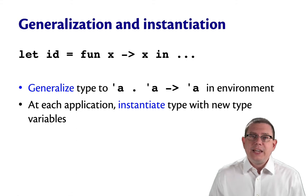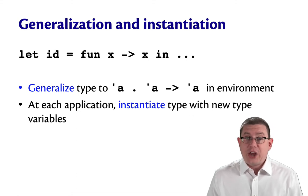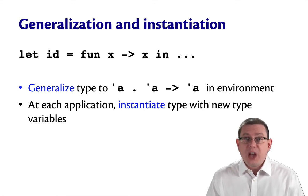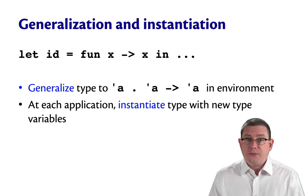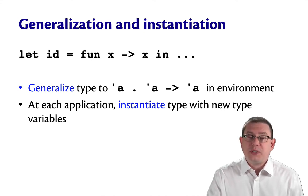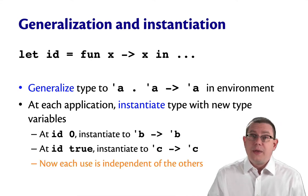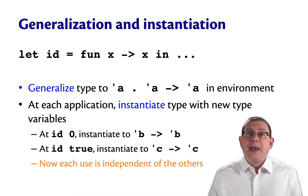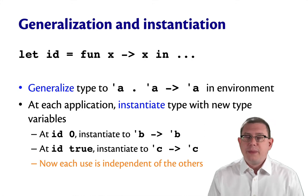Then at each use of the function, at each application of it, type inference will instantiate that type with a new type variable. So it's like filling in that universal quantification with something more specific. At the application of id to 0, we might instantiate it to, say, beta arrow beta, assuming beta is a fresh type variable.